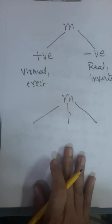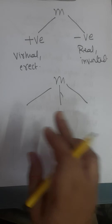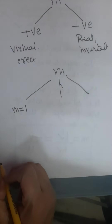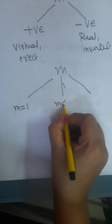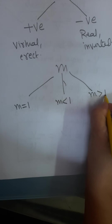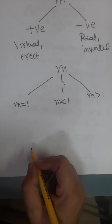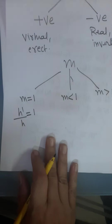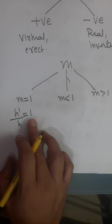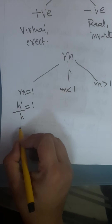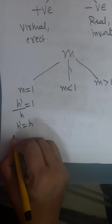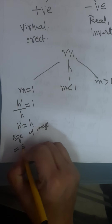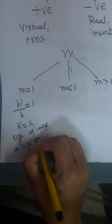Now let's come to the values. According to values, magnification is of three types: magnification equal to 1, magnification less than 1, or magnification greater than 1. If magnification equals 1, it means H dash by H = 1, so H dash equals H — that is, the size of the image is equal to the size of the object.